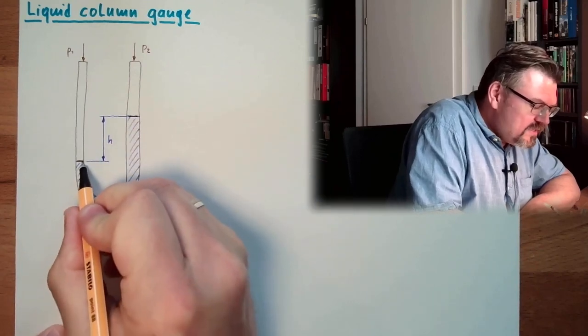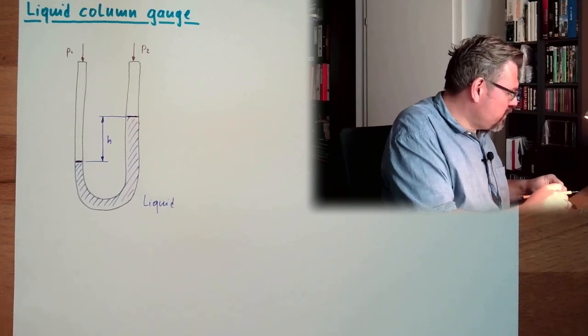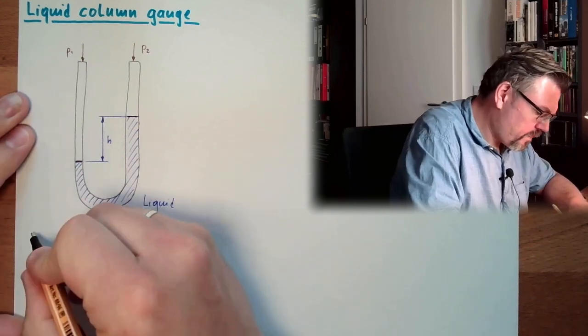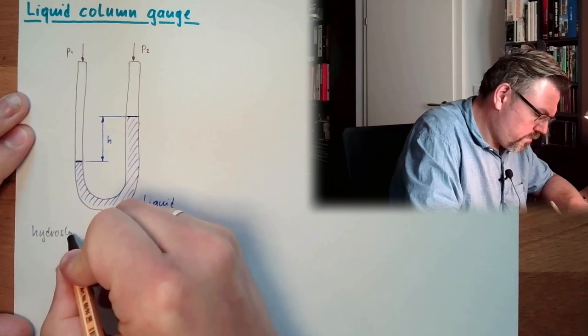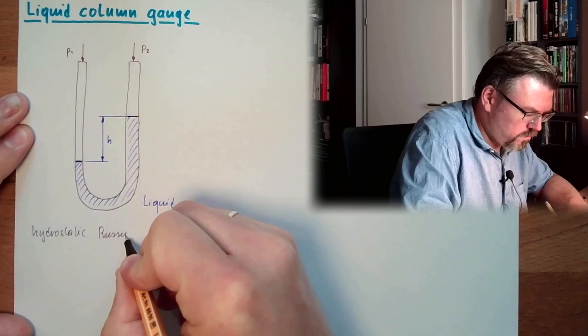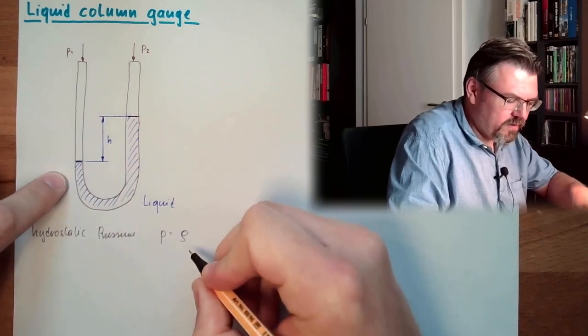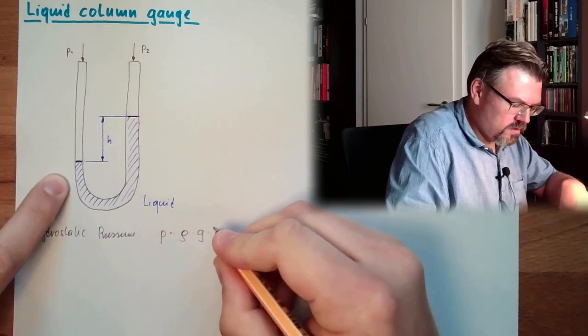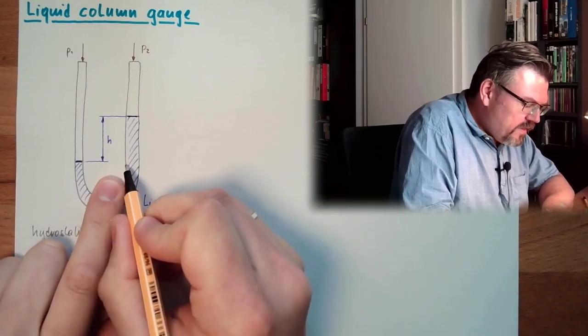So what is this difference in height indicating? Well, you know, the hydrostatic pressure. It's the density of the liquid, earth acceleration, and the height. So this is actually, this here, is the hydrostatic pressure.